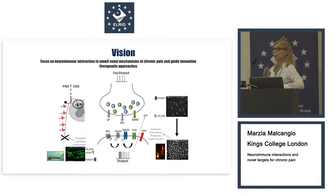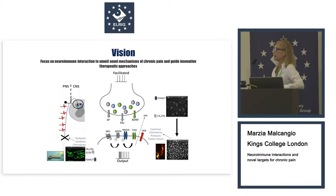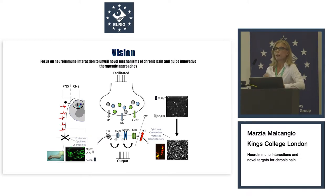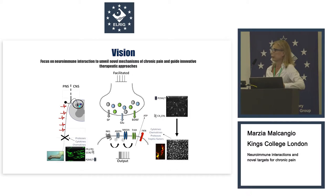What the pain community has realized over the last 20 years is that injury in the periphery is associated with infiltration of immune cells — macrophages that go to the site of injury. These cells release cytokines and chemokines, factors that can sensitize the sensory neurons, which express receptors for them, such as interleukin-1 and TNF.